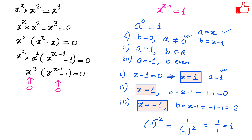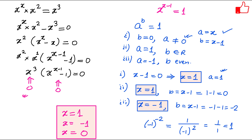So x equals minus 1 is also a solution. For this problem we have: from Case 2, x equals 1 and x equals minus 1; and from Case 1, we also got x equals 0. So basically there are three solutions for this problem: x equals 0, x equals 1, and x equals minus 1.